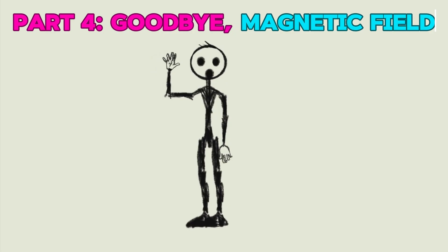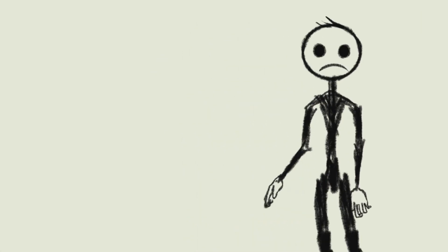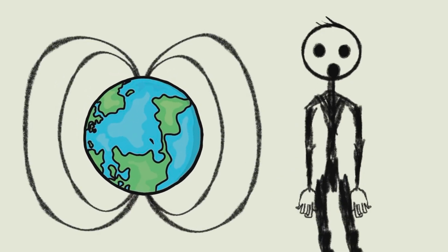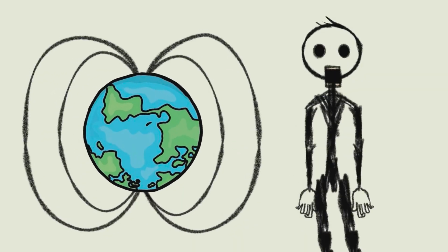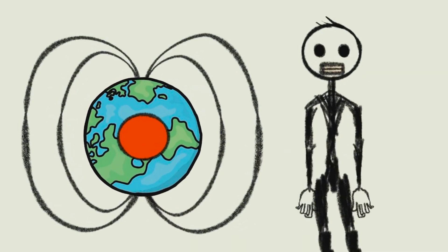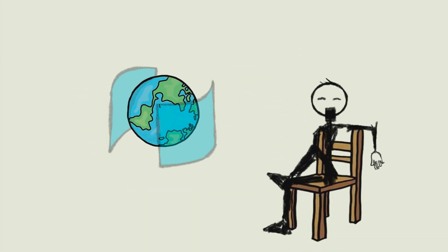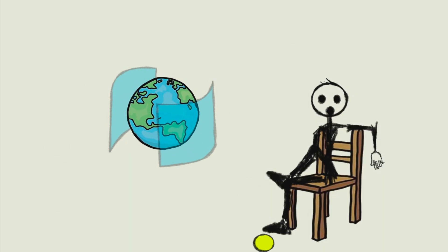Part 4. Goodbye, magnetic field. But that's not all. There's another critically important thing: the Earth's magnetic field. Our planet acts like a giant magnet, thanks to its rotation and molten metal core. This magnetic field creates an invisible protective shield around the planet that reflects deadly particles from solar winds and cosmic radiation.